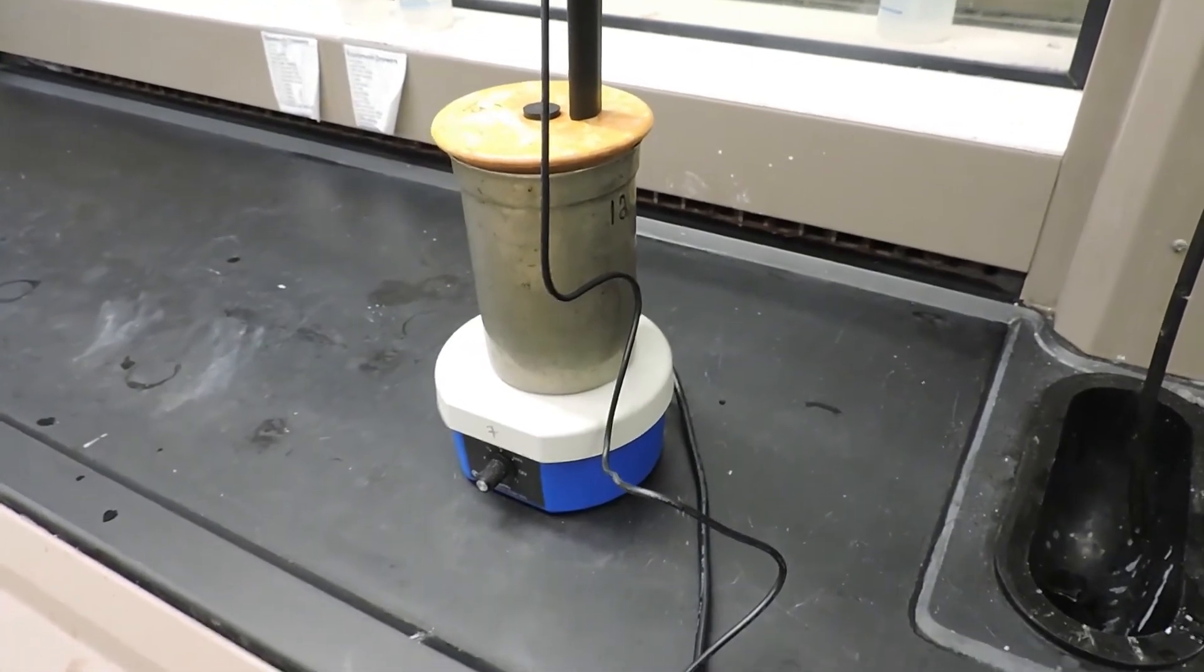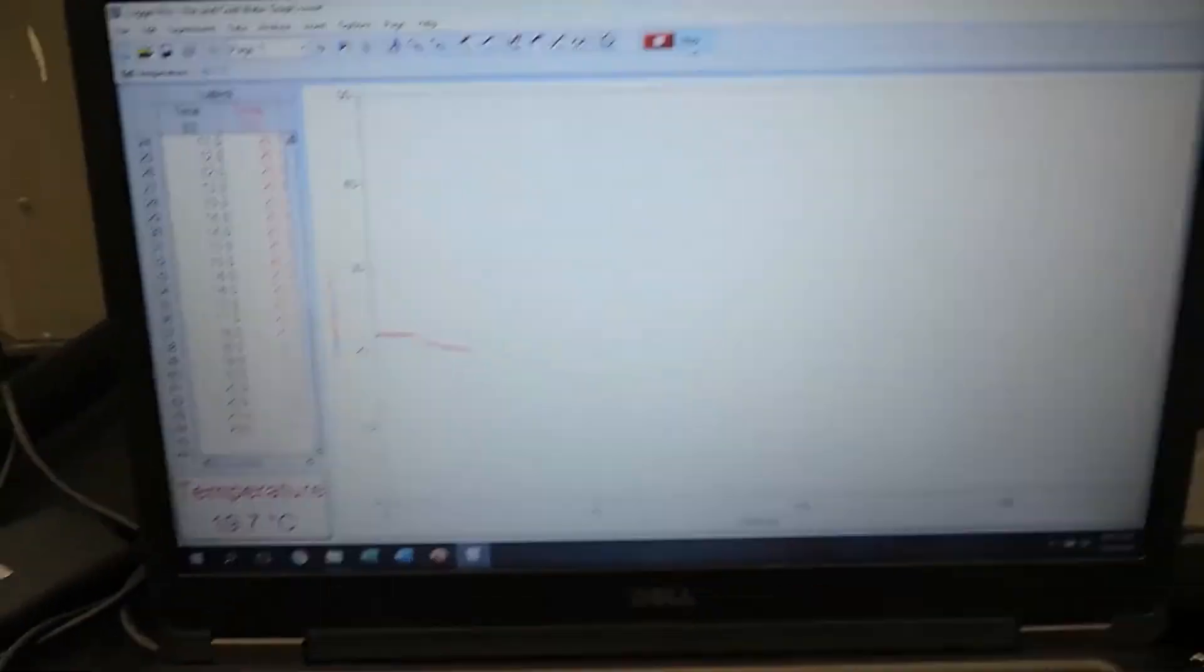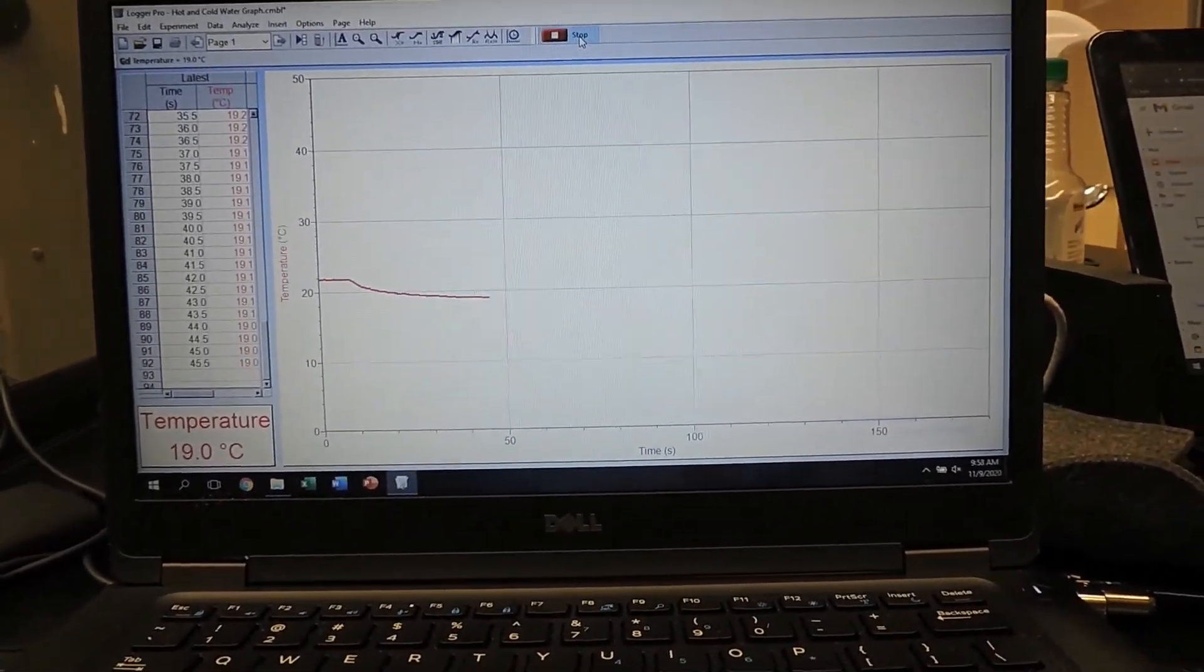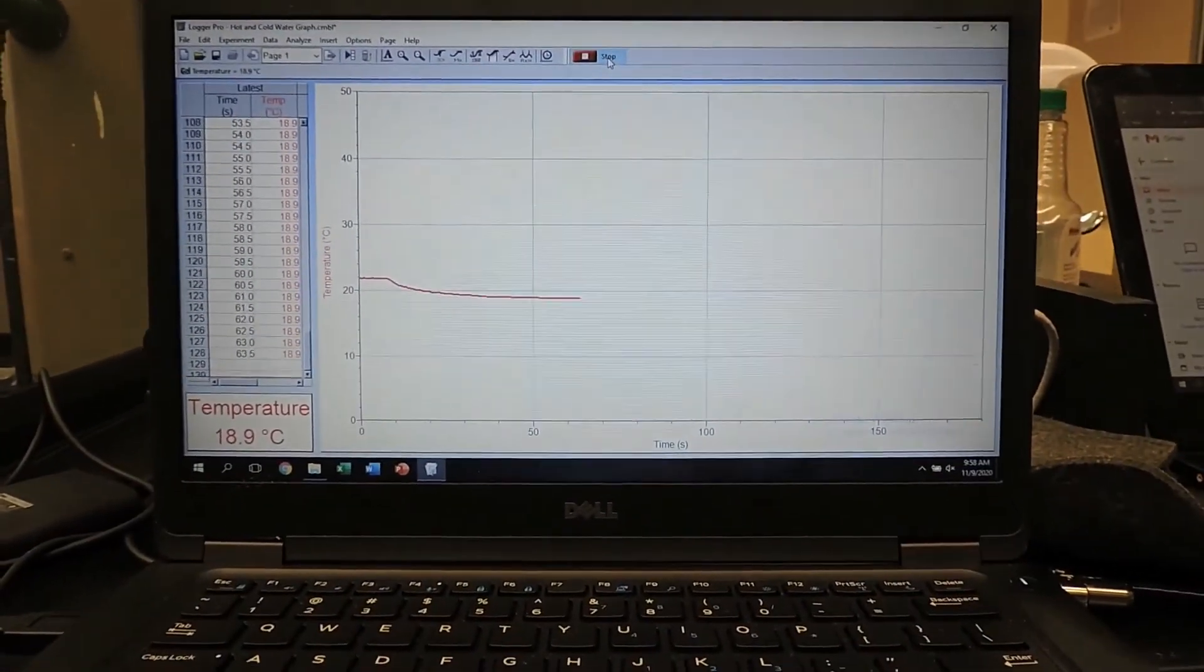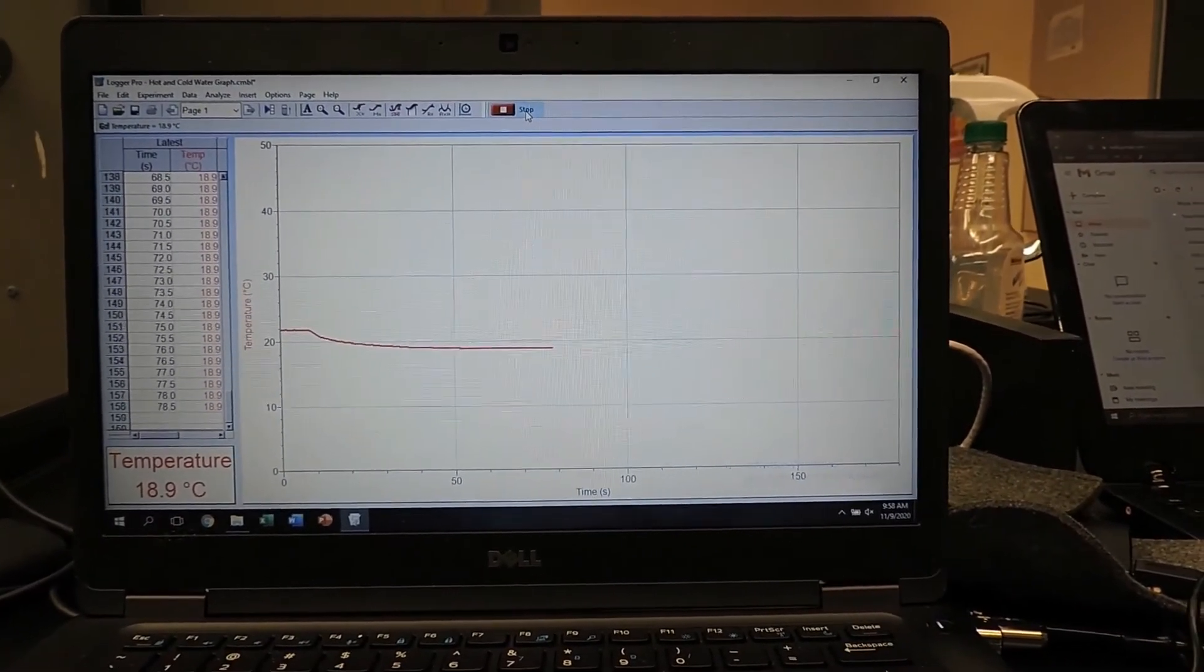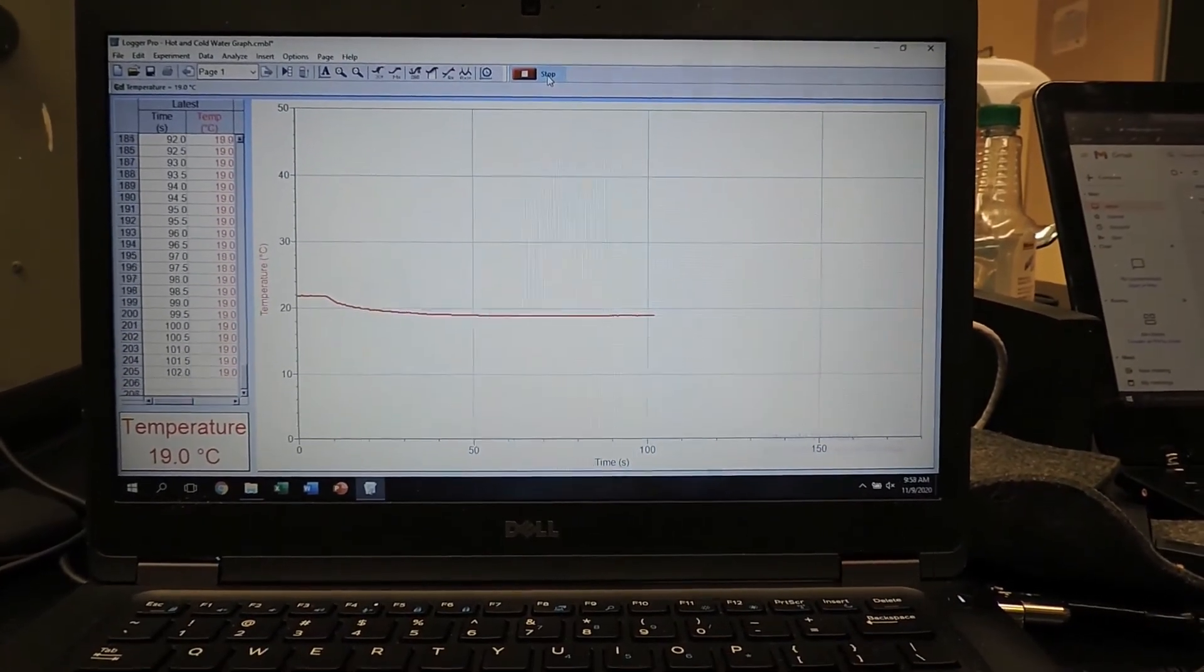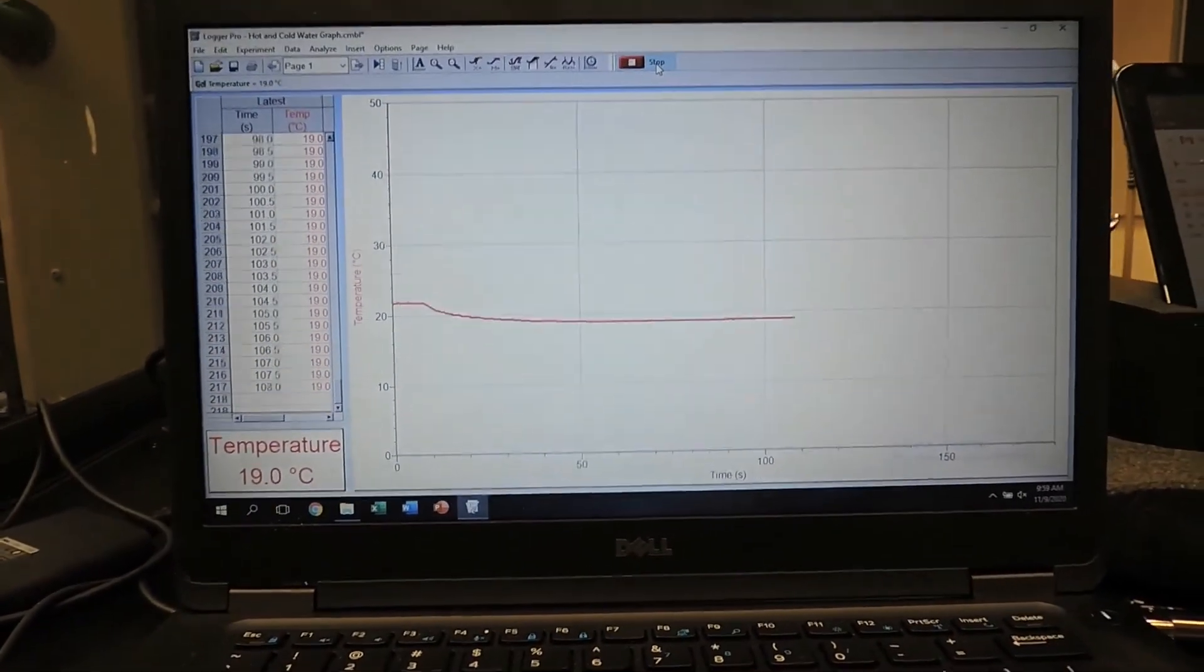Now that we've added potassium iodide, we'll let it stir and monitor the graph. It appears that the temperature has stabilized, and we are at 19 degrees Celsius as our final temperature.